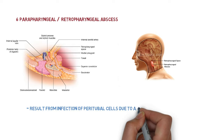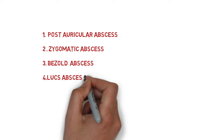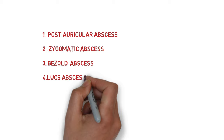In summary, we have covered all six abscesses in relation to mastoid infection: post-auricular abscess, zygomatic abscess, Bezold's abscess, meatal abscess or Luc's abscess, Citelli's abscess, and parapharyngeal or retropharyngeal abscess. Thank you.